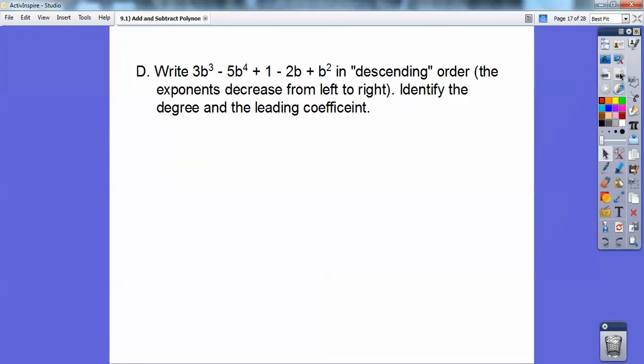Alright, so write this polynomial. It's called descending order, which means the exponents decrease from left to right. And then after you write it in descending order, then identify its degree and the leading coefficient. So look at all those. And the biggest power I see is this 5b to the 4th. Actually, it's negative 5b to the 4th.